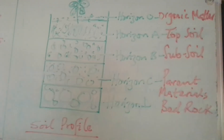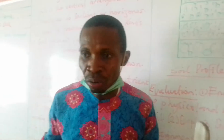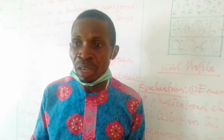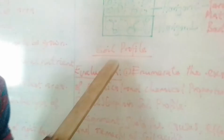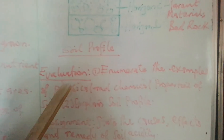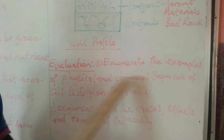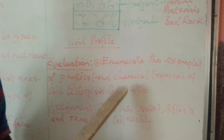You should be able to understand that properties of soil are very important when dealing with what kind of soil to use and the kind of crops to grow. The soil profile also helps you know how to plan for crop propagation and crop development. On the board we have: enumerating examples of physical and chemical properties of the soil.